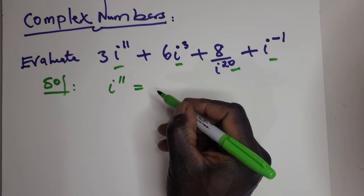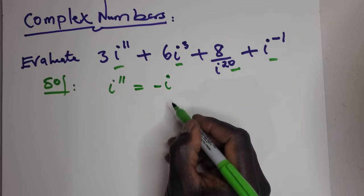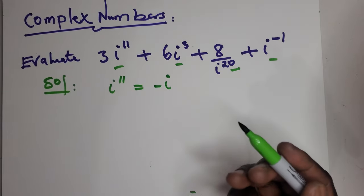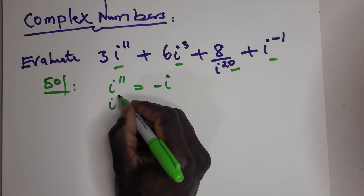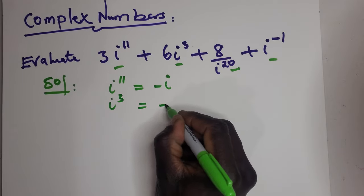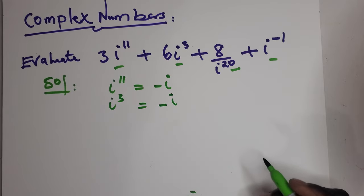is equal to negative i. You can work that out with a calculator. And then i to the power of 3 is minus i.